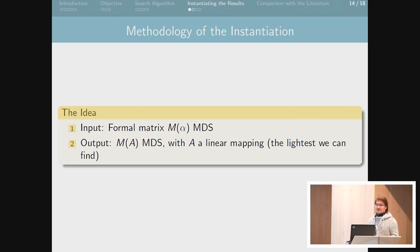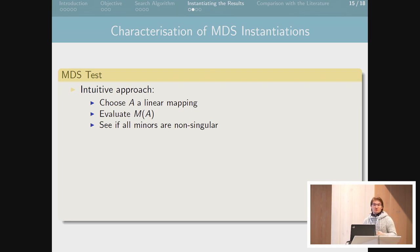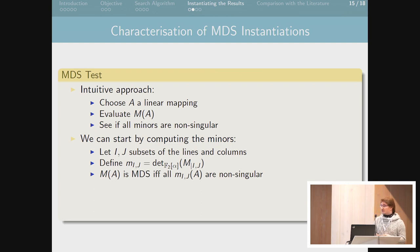We have formally MDS matrices in alpha, and now we want to find the best instantiation for alpha that gives something MDS and lightweight. We can characterize very efficiently if an instantiation will be MDS or not. The basic way is to take a linear mapping A, evaluate the matrix at point A, and see if all the minors are non-singular. But we can start by computing the minors directly on the formal matrices — the formal minors Mij, which are polynomials in alpha. Evaluating these polynomials at point A gives an equivalence for the instantiation to be MDS.